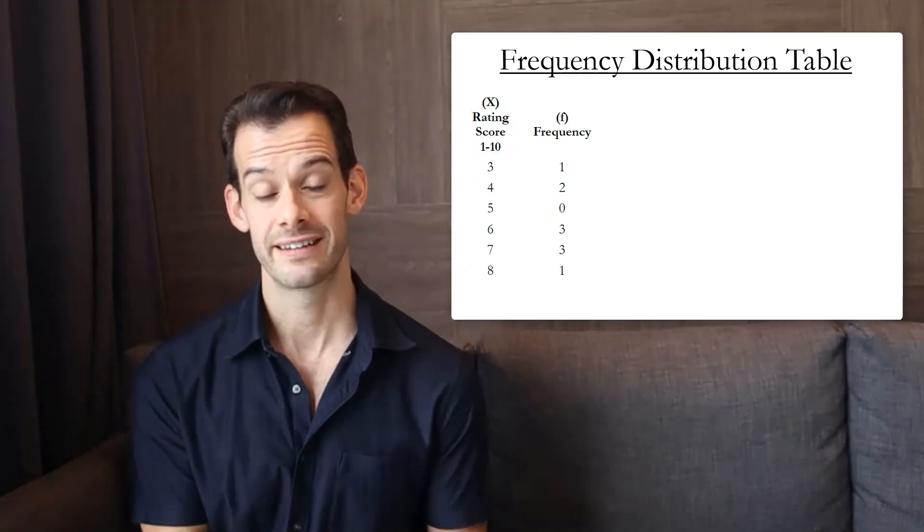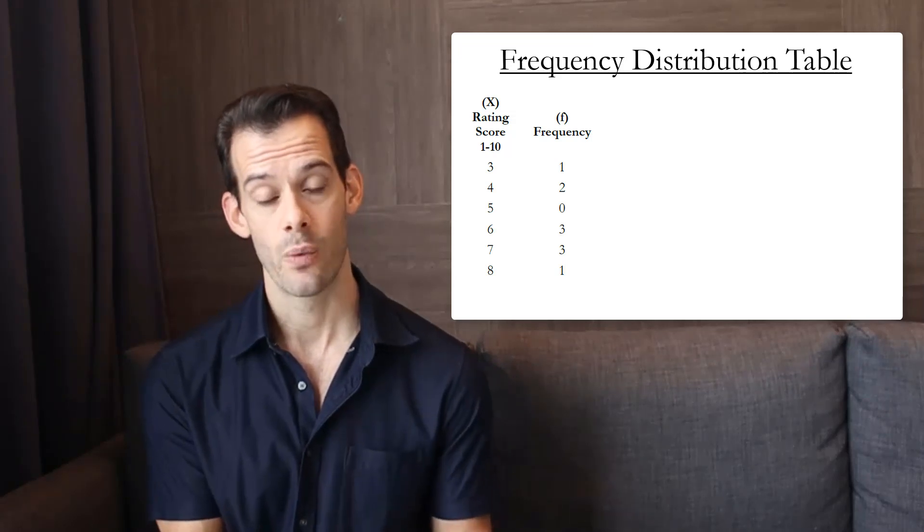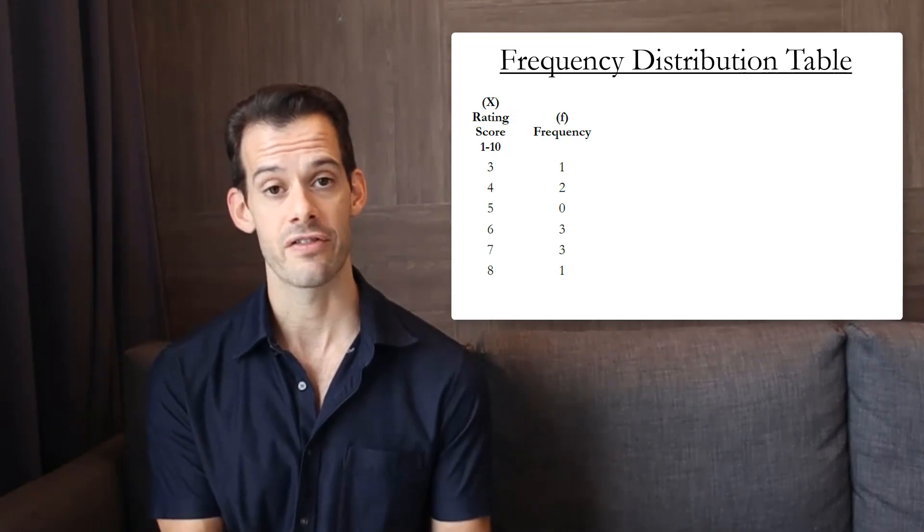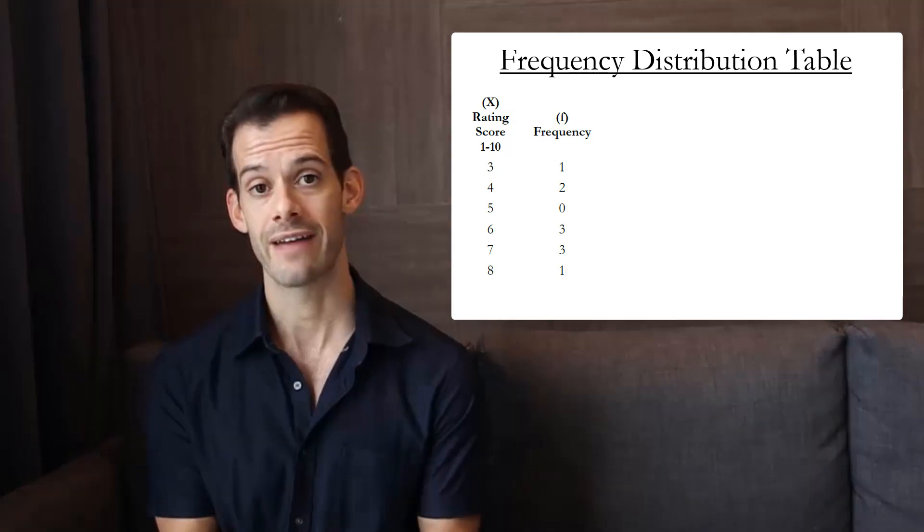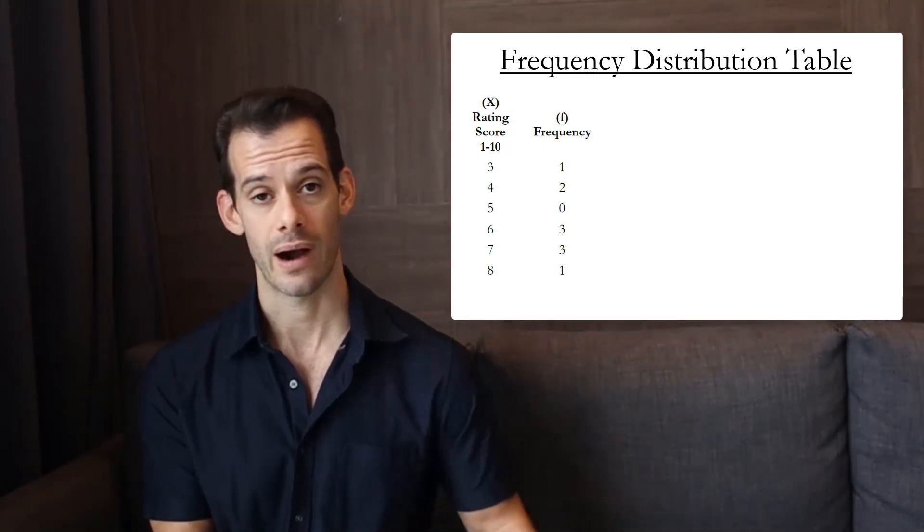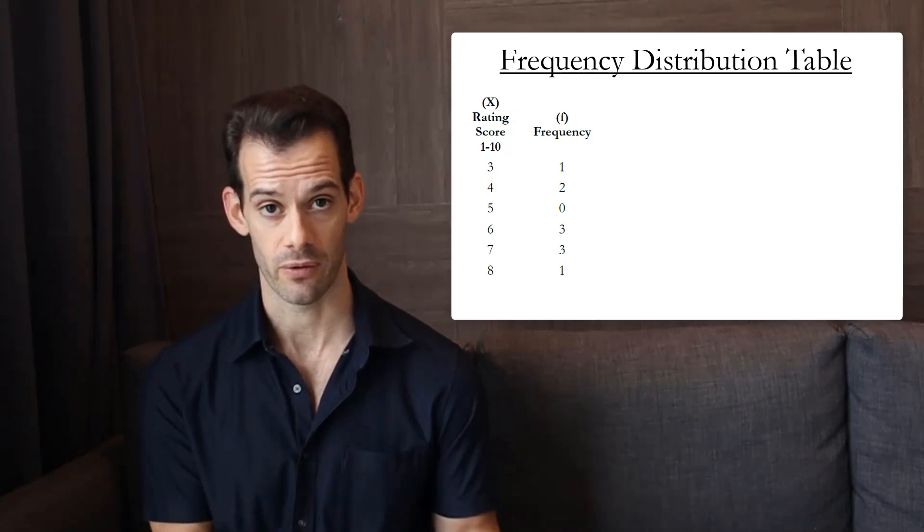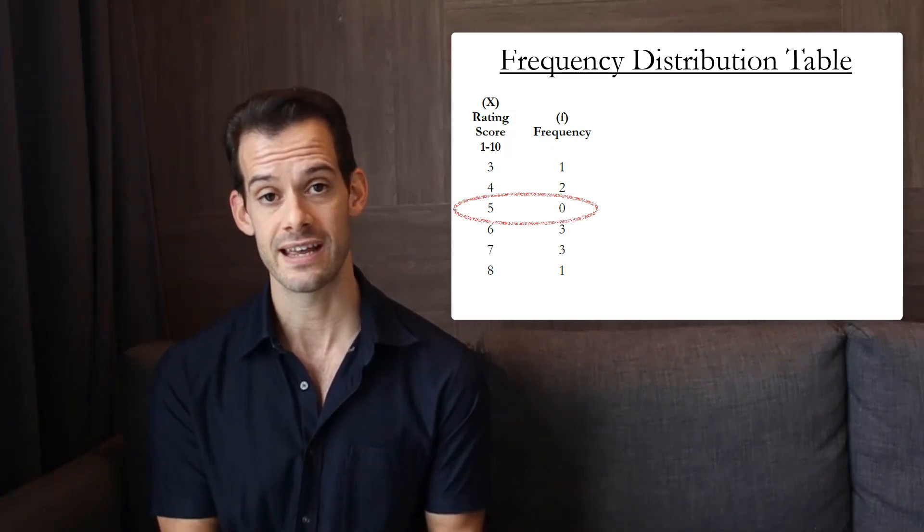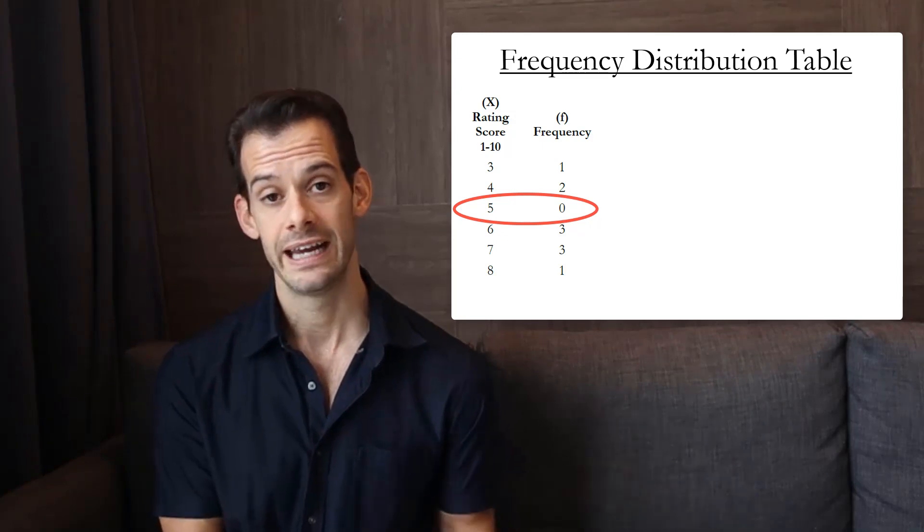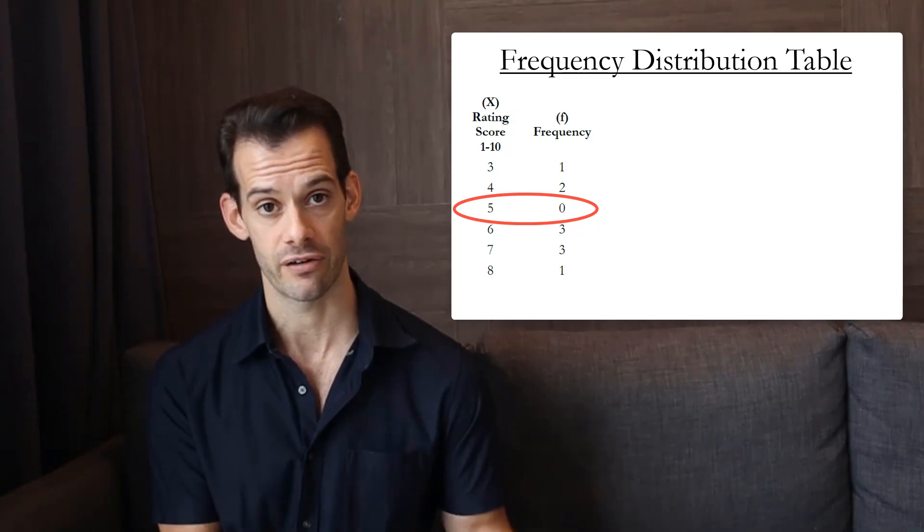For values of x that didn't occur in the middle of our range we still want to include a row and indicate that the frequency was 0. We want to have a smooth transition from our lowest to our highest score without any gaps, even if there were gaps in our sample. So in this example we can see that we still include a row for 5 even though we didn't have any scores of 5 in our sample.